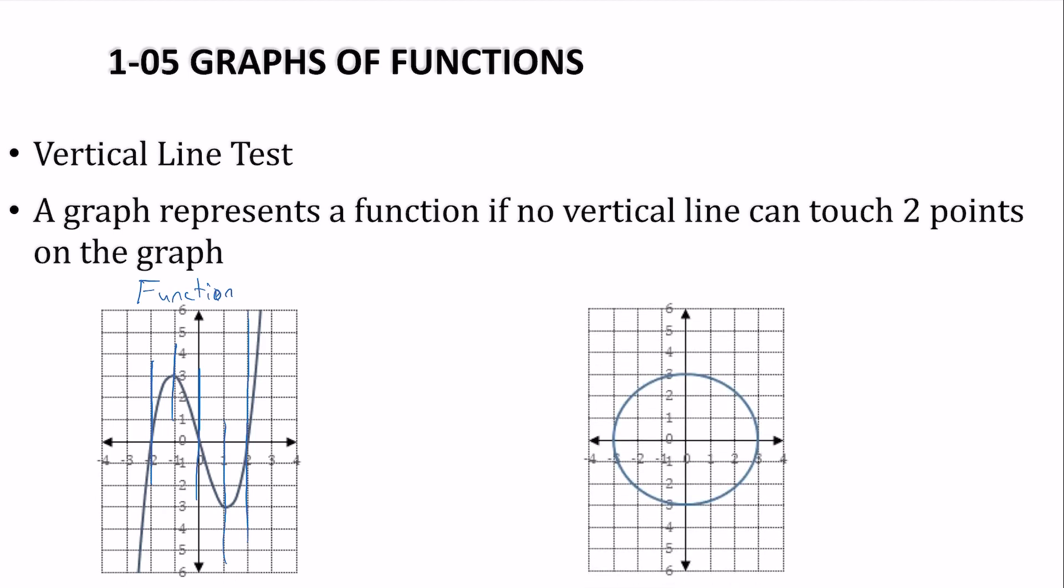How about this one? That's right. This one is not a function because, for example, here is a line that touches the graph twice. A vertical line touches the graph twice, so it's not a function.